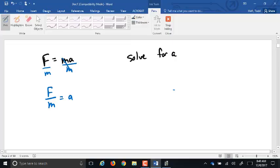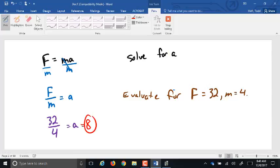What if I ask you to evaluate for F equals 32 and M equals 4? Well, what do I do over here? I put 32 in for F and 4 for M. 32 divided by 4, which ends up being 8. So A equals 8.